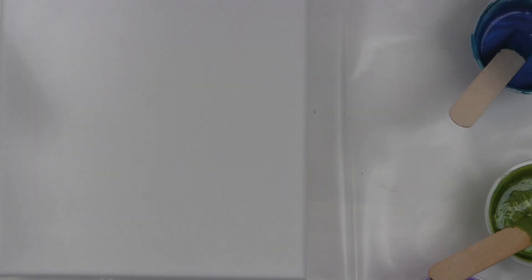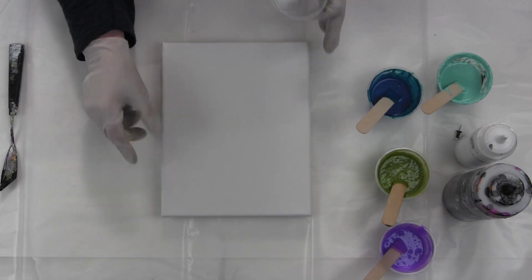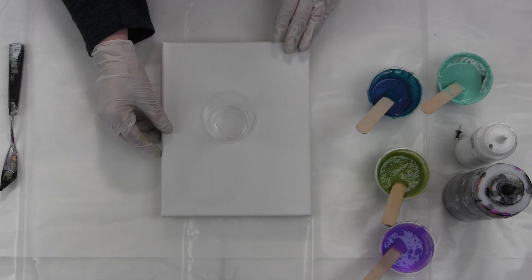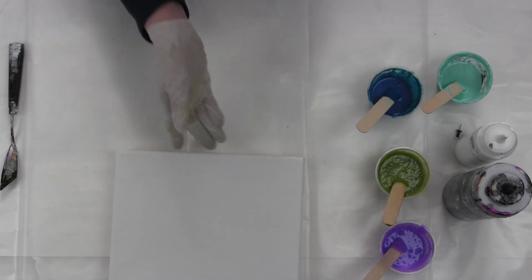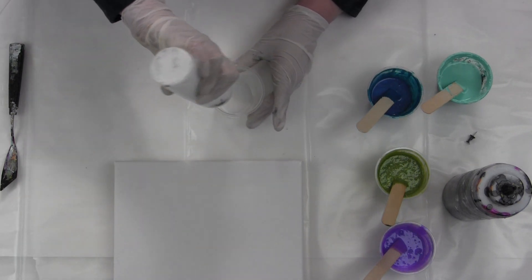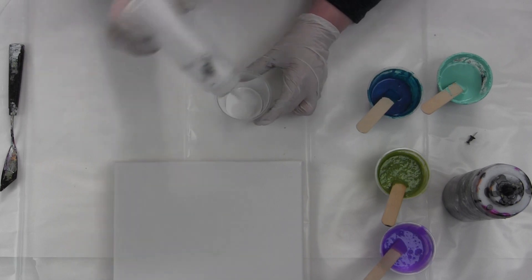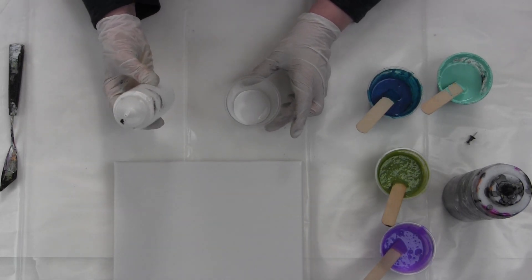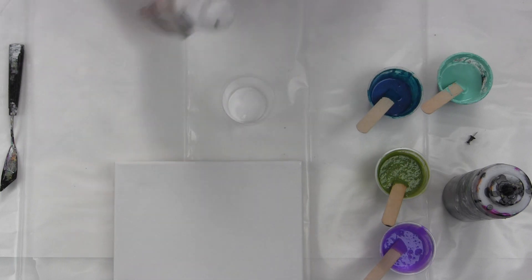I haven't done a Dirty Pour in a really long time, so we're going to do a Dirty Pour. I've got a little 5x7 canvas here. I'm going to put my white with no silicone on the bottom. I keep them in squeeze bottles because I do a lot of decorative work. These are so handy for the colors that you use a lot of.